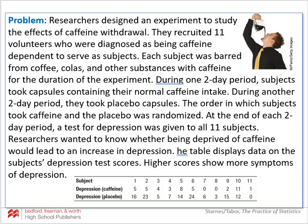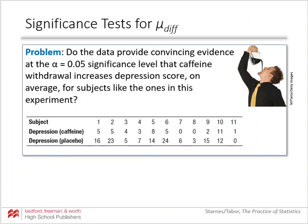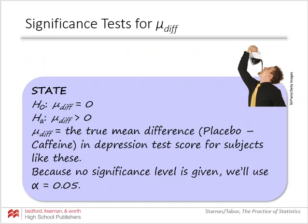We want to know if this data provides significant evidence at α = 0.05 that caffeine withdrawal increases depression score on average. For the state step: H₀: μ_diff = 0; Hₐ: μ_diff > 0, where μ_diff is the true mean difference, placebo minus caffeine, in depression test scores for subjects like these. We will use α = 0.05.